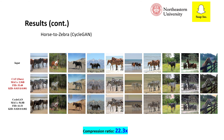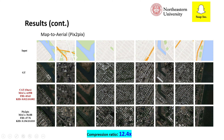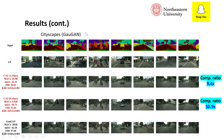We show images generated by our models and compare them with those from the original model. For the horse-to-zebra dataset with the CycleGAN model, with a compression ratio of 22, our model generates better image quality than the original. For the map-to-aerial dataset with the pix2pix model, our model generates better image quality with a compression ratio of around 12. For the cityscapes dataset with the GauGAN model, our model achieves better image quality with a compression ratio of 10, and even at a compression ratio of 50 the output is still readable.